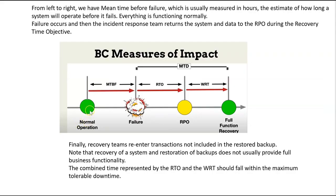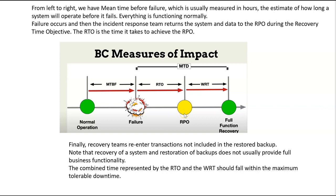Let's look at a timeline. From left to right we have normal operations until a failure occurs. The time between normal operations and the failure is known as Mean Time Before Failure (MTBF) — this is an estimate of how long a system will operate before it fails. After the failure, an incident response team works to return the system and data to the Recovery Point Objective (RPO) during the Recovery Time Objective (RTO). The RTO is the time it takes to achieve the RPO.